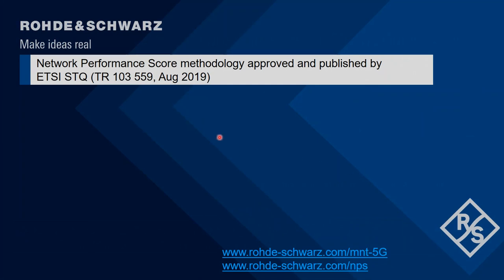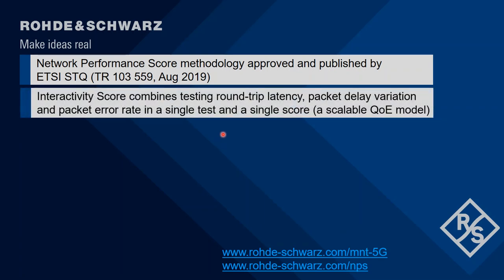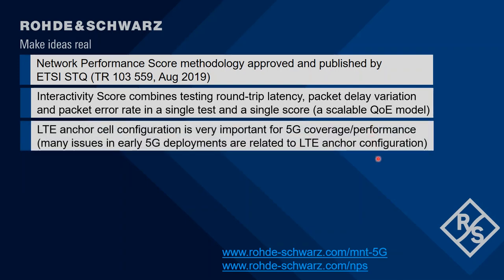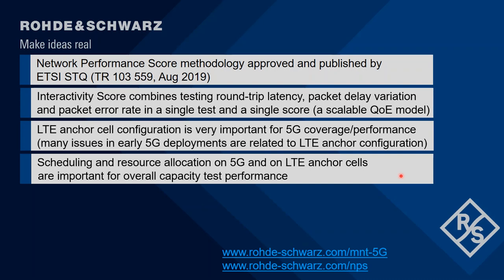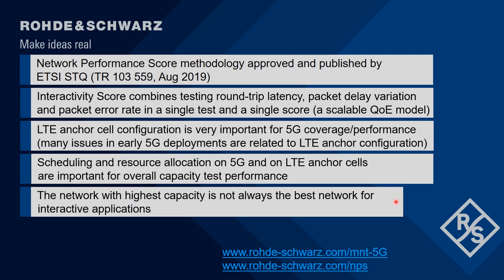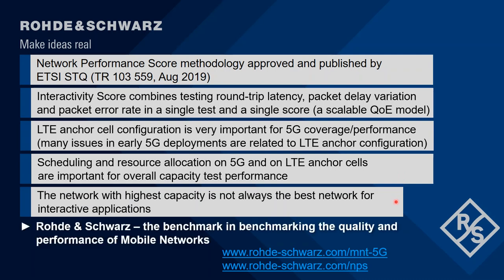In summary: the network performance score methodology has been approved and published by ETSI. The interactivity score combines roundtrip latency, packet delay variation, and packet error rate into a single scalable QoE model applicable to other applications. The LTE anchor cell configuration is very important for overall 5G performance, as many issues in early 5G deployments are related to LTE anchor configuration. Scheduling and resource allocation on 5G and the LTE anchor remain critical for capacity performance. Importantly, the network with the highest capacity is not always the best network for interactivity. Please visit our website for more information. Thank you.